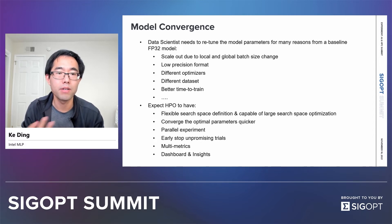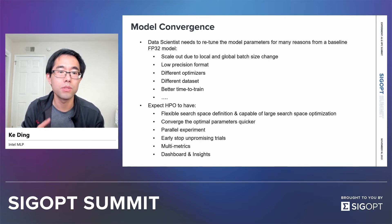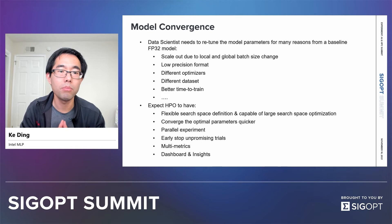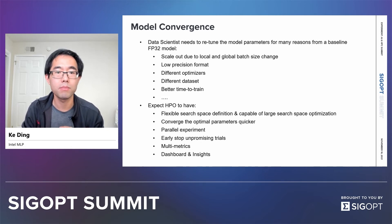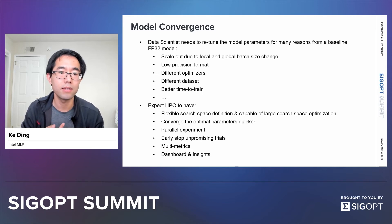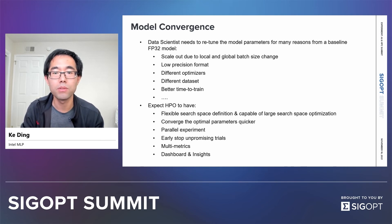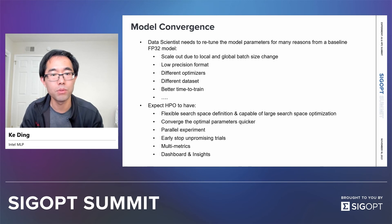Such examples are actually very common, such as when you scale out the training with more hardware resources to speed up training, meaning you now have a bigger batch size, or you have to use a low-precision format such as BF16. And sometimes you change the optimizer, or you are given a new dataset to optimize for a particular use case. Or sometimes you simply want to tune the parameters further to get a better time to train.